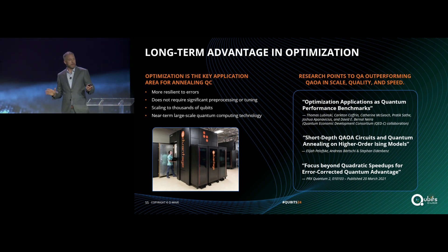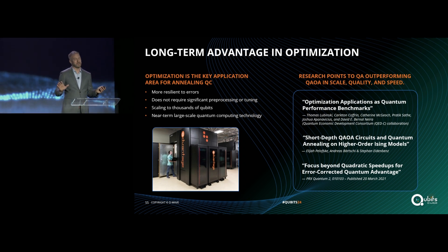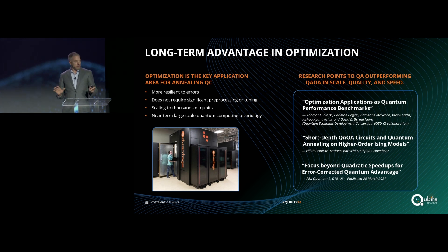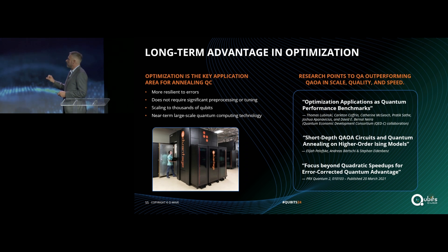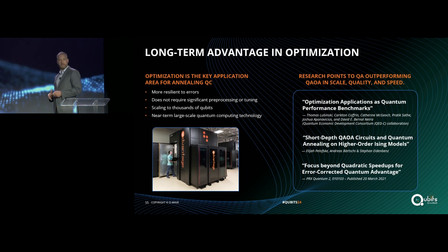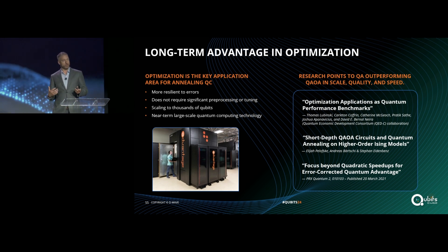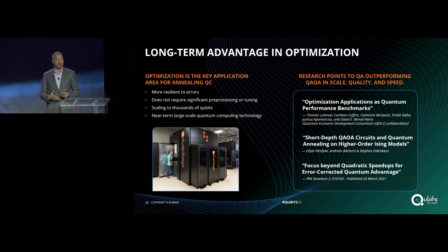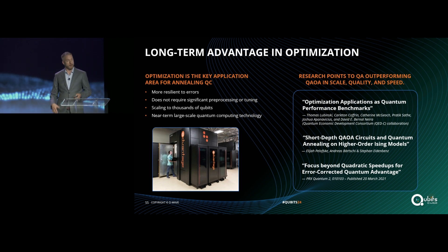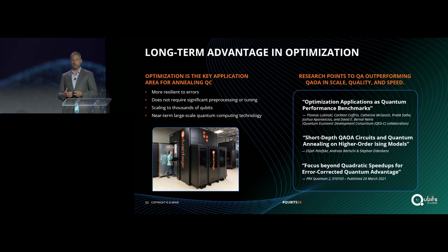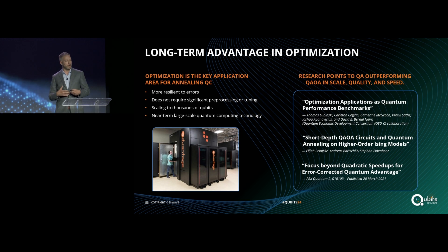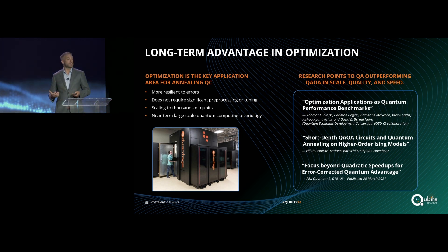What about the day when we have fully scaled error-corrected gate model systems? Even then, there's work that came out a few years ago from the quantum theory team at Google suggesting that your underlying quantum algorithm needs to have at least a quadratic speedup or more over classical approaches for it to make sense to run on a gate model system, because the compute involved with running error correction will blunt the advantage of a quantum algorithm unless you have that scaling.